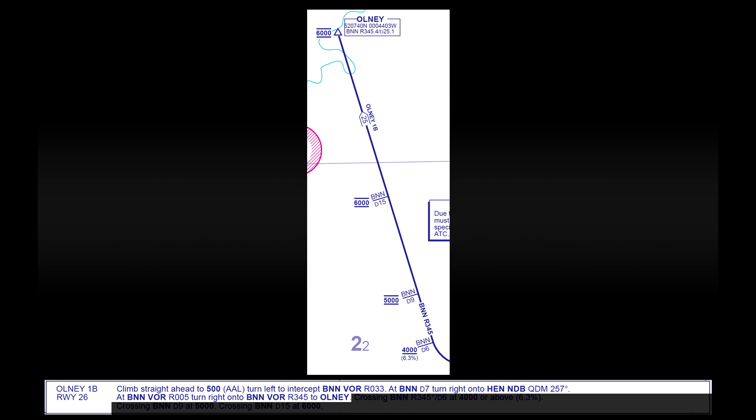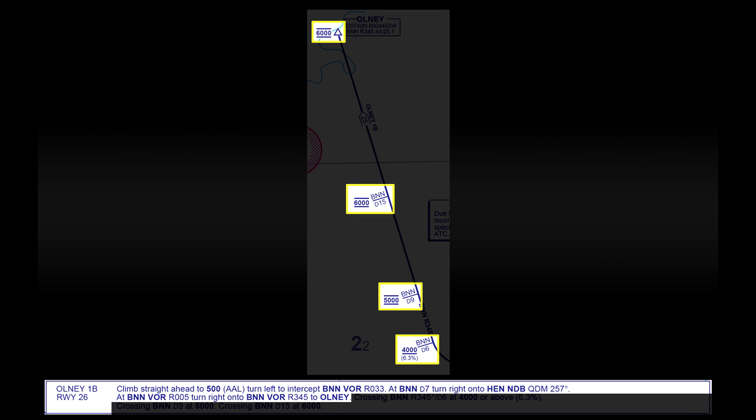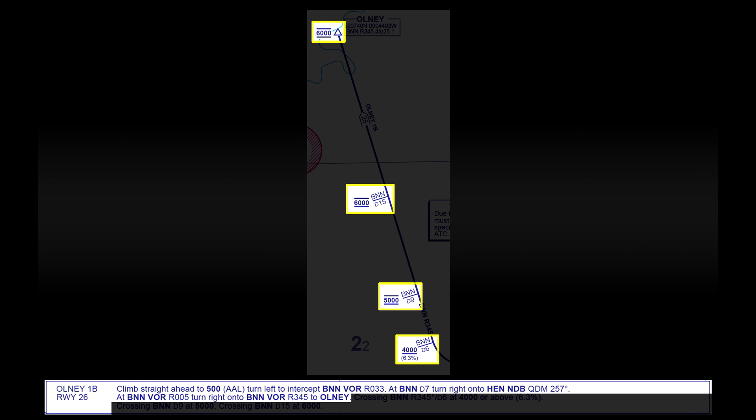As we do that, we would need to adjust our VOR to a radial of 005 from the VOR station. The reason we do this is so that we know when to begin the next turn. As we pass that radial, we would begin a turn onto the 345 degree radial from Bovington, and then from there it's a straight line until we reach Olney. However, if you look closely, you'll notice along this part of the departure that we now have altitude restrictions in place.